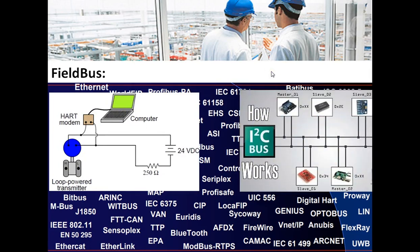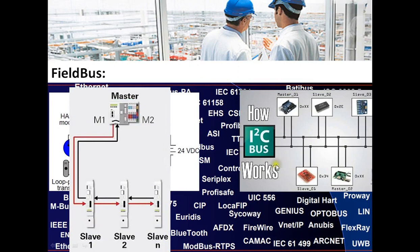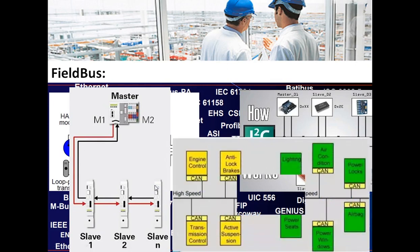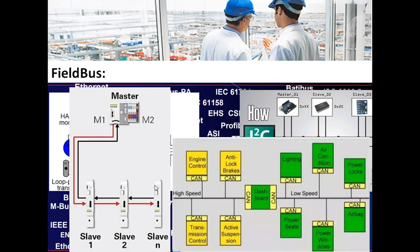For communication between integrated circuits on a printed circuit board, I2C, SPI, or CAN protocol can be selected. For communication between servo drives, SERCOS protocol can be selected. For automobile applications, CAN or any other protocol can be selected.